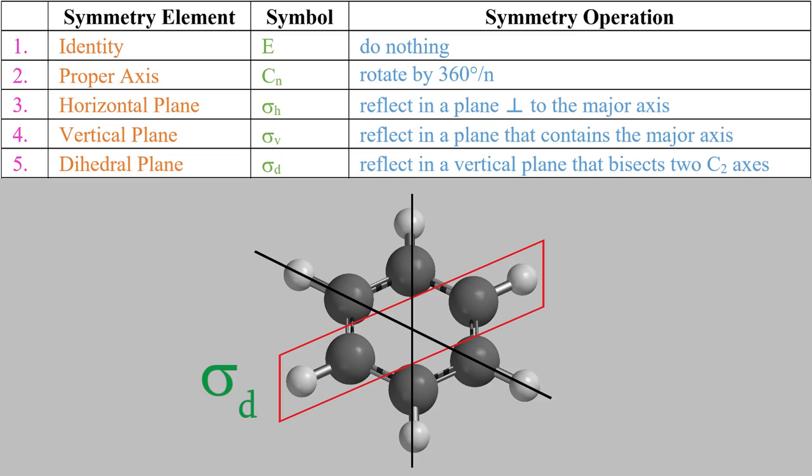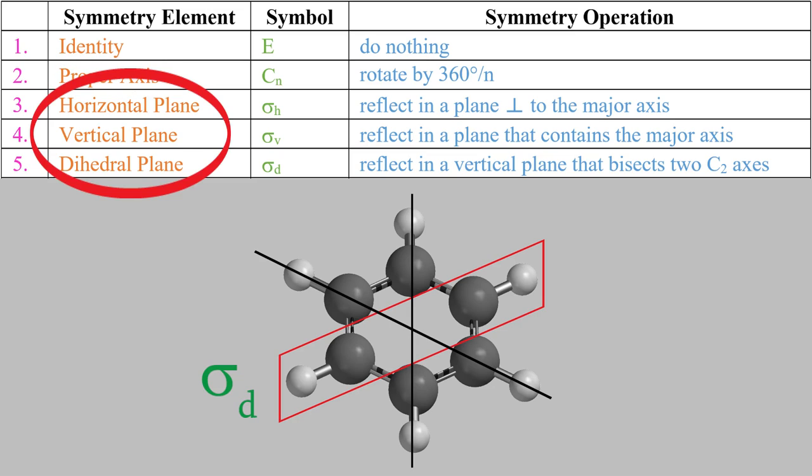So now we've looked at five different symmetry elements: the identity element, the proper axis, and three different kinds of mirror plane.